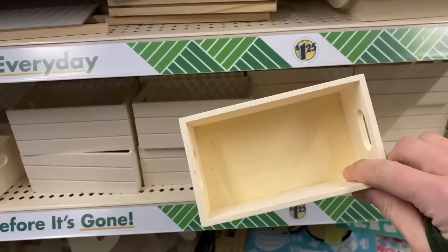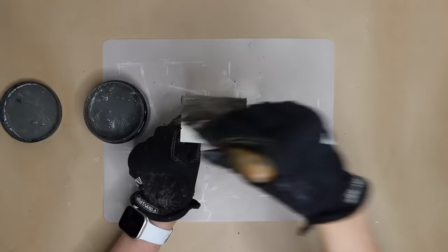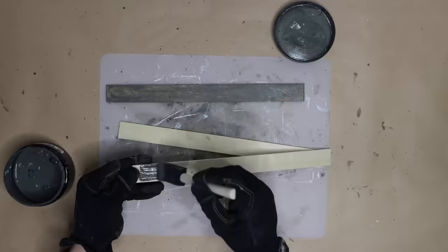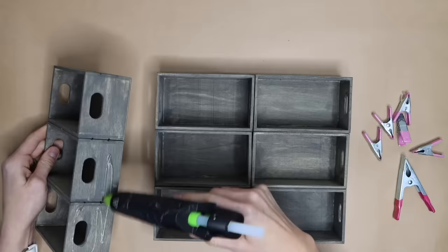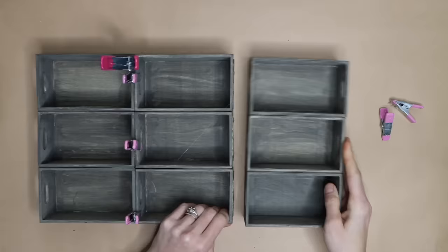Head to Dollar Tree and pick up nine small wood crates and stain them with wood stain. Take three wood stir sticks and stain them as well. Next, glue the crates together with three in a row. Then stack and glue each row to the top of the first row.